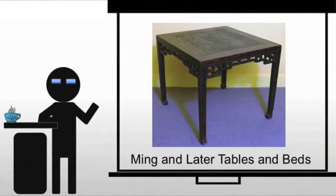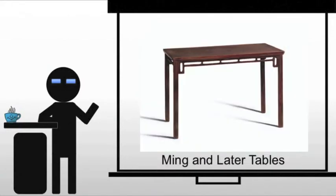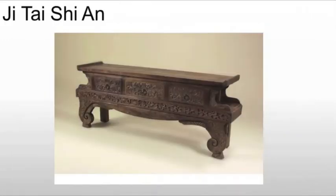We'll now turn to tables and beds, where we see a lot of changes taking place in the Ming and later. Starting with tables, what you're going to see is a couple of different forms, and these will be imported to the West, just under a different name.